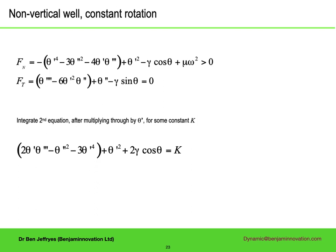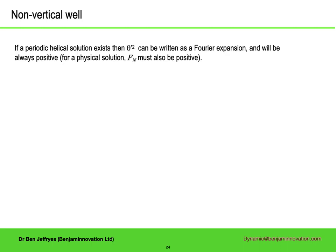Now, we want to find solutions to this equation that look like a helix. Not a constant pitch helix, the effects of gravity won't allow that, but some kind of helix. What do we mean by a helix? It is a solution that is not just periodic along the well, but periodic in theta. If it is periodic in theta, then theta dashed squared can be written as a Fourier expansion. Furthermore, it must also be positive, as well as the normal side force being positive for a physical solution.